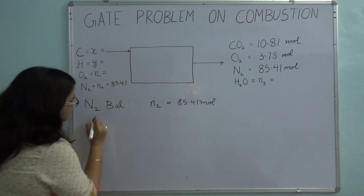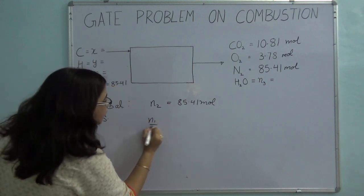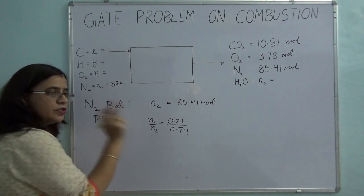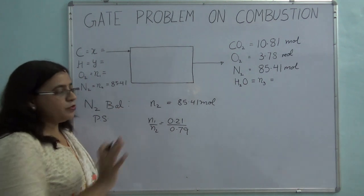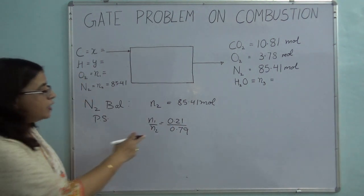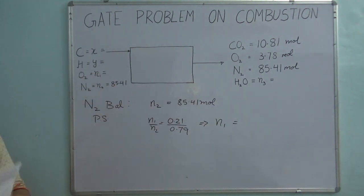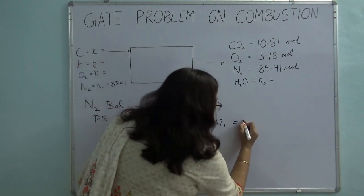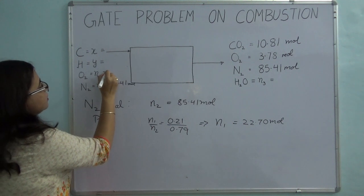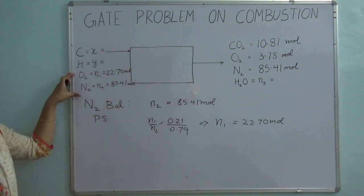Next, we use the process specification: the ratio of N1 to N2 is 0.21 over 0.79, since air is 21% oxygen and 79% nitrogen. Since we know N2, we can find N1. Using this ratio, N1 comes out to be 22.70 moles. So we have now used two equations and calculated two variables, N1 and N2.